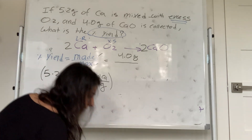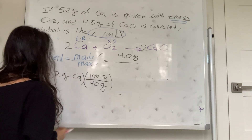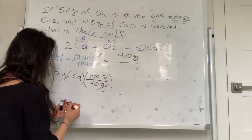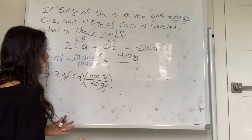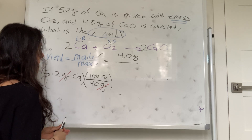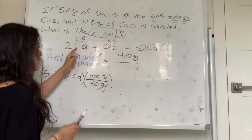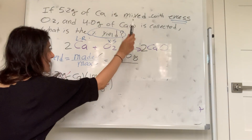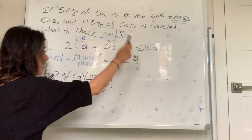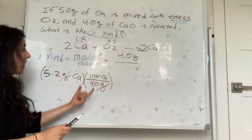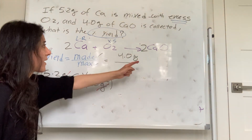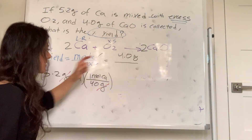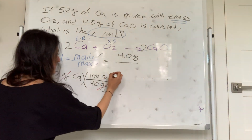Let's do one more problem. Percent yield is made over max. Sometimes you have to figure out what the max is using a limiting reagent calculation.